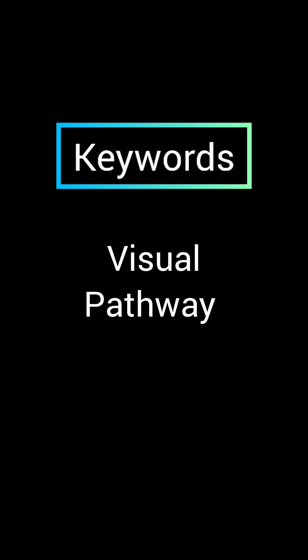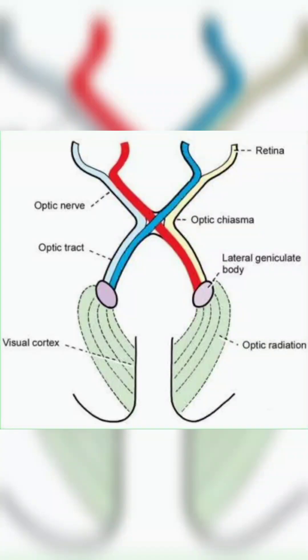Visual pathway. The first one is the retina. It is a thin delicate membrane consisting of rods and cones for color and dark vision. The second one is the optic nerve. It is made up of axons of ganglia and cells of the retina.